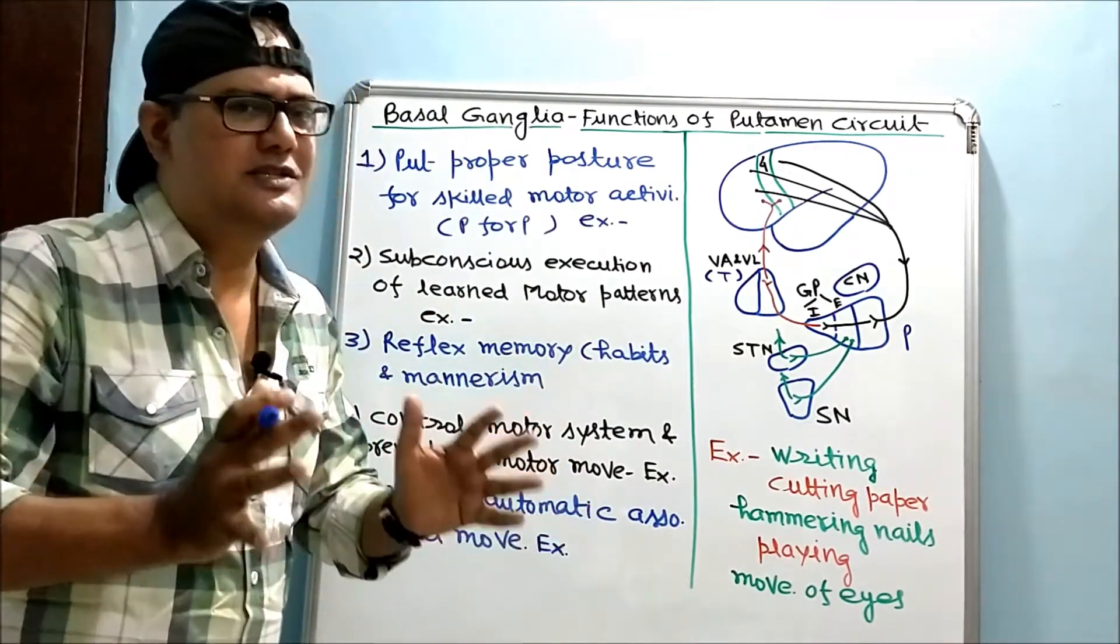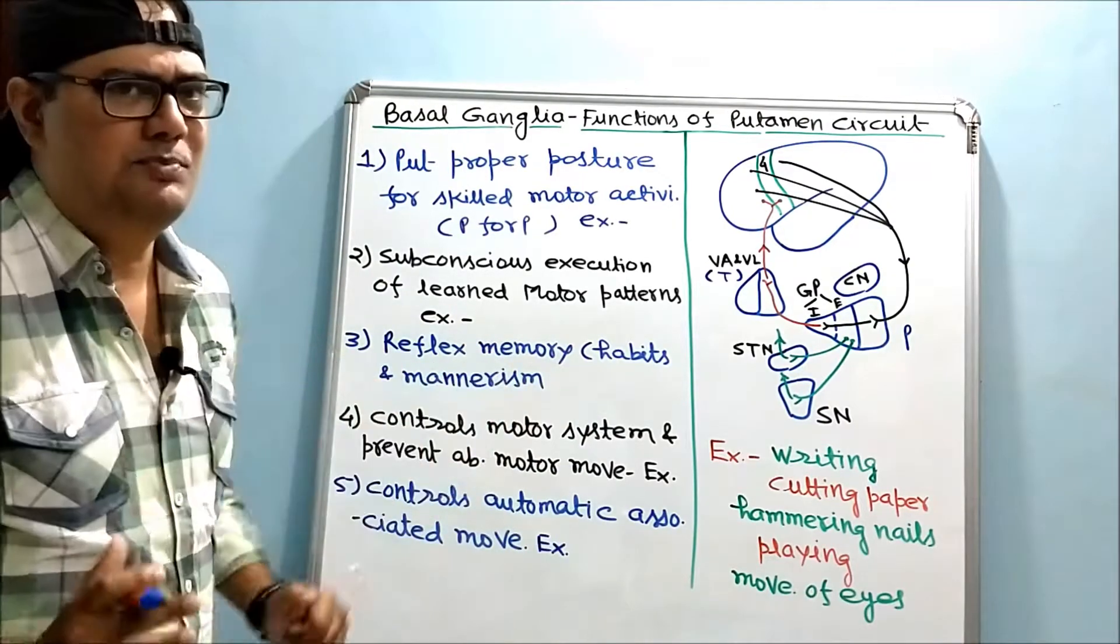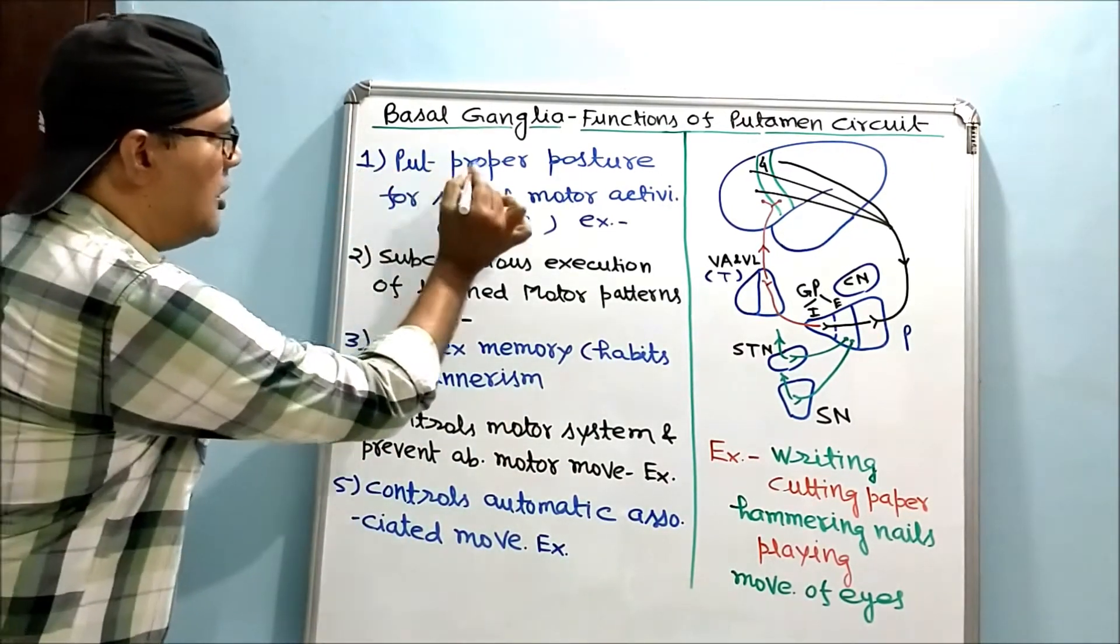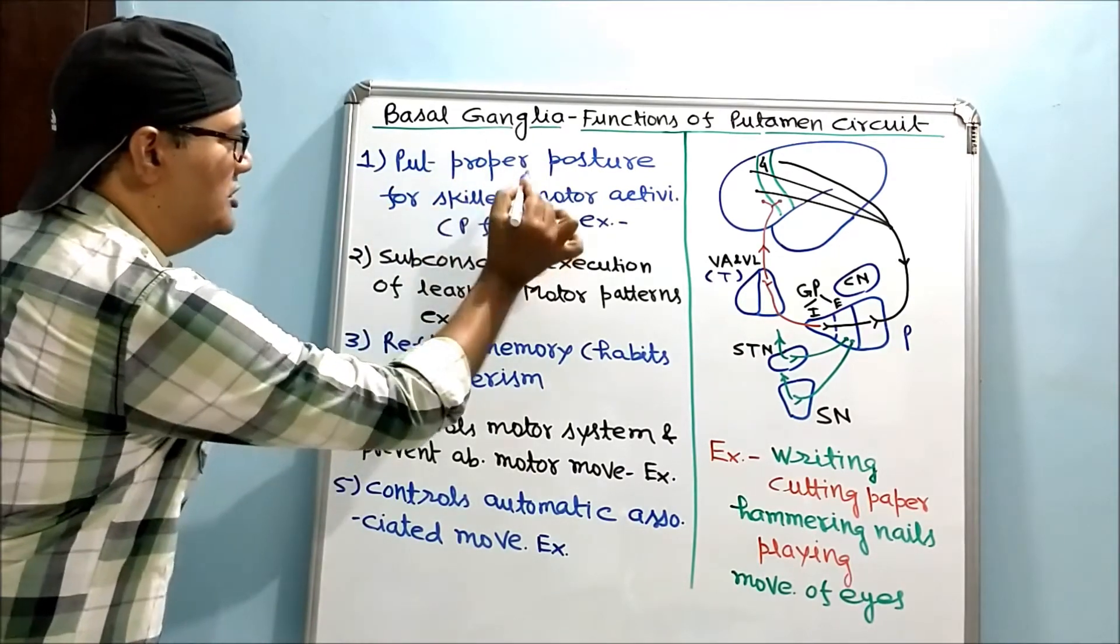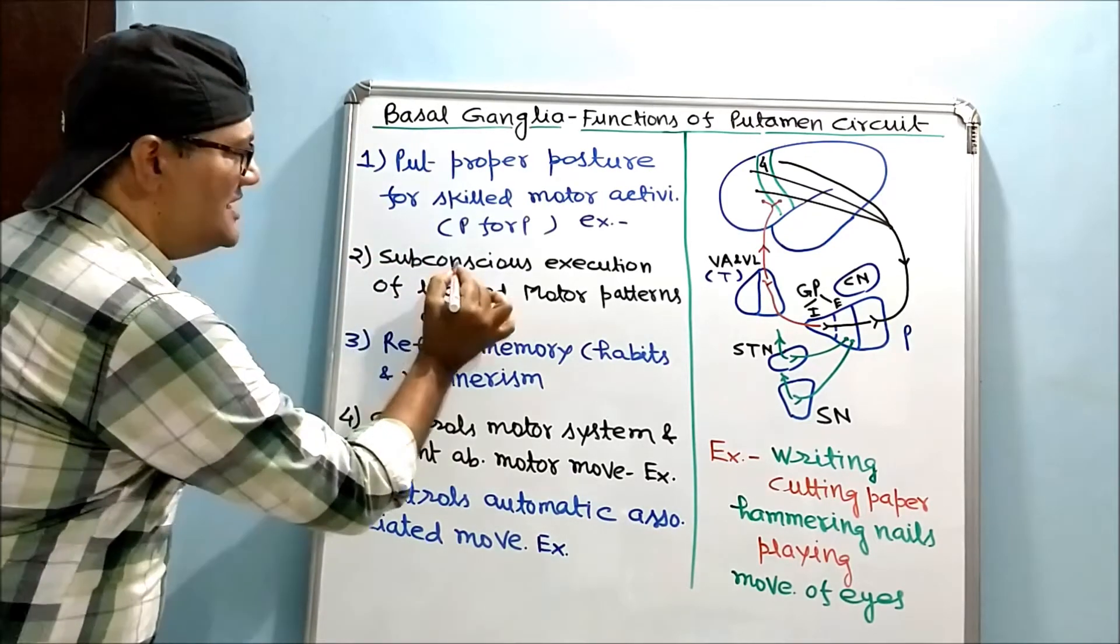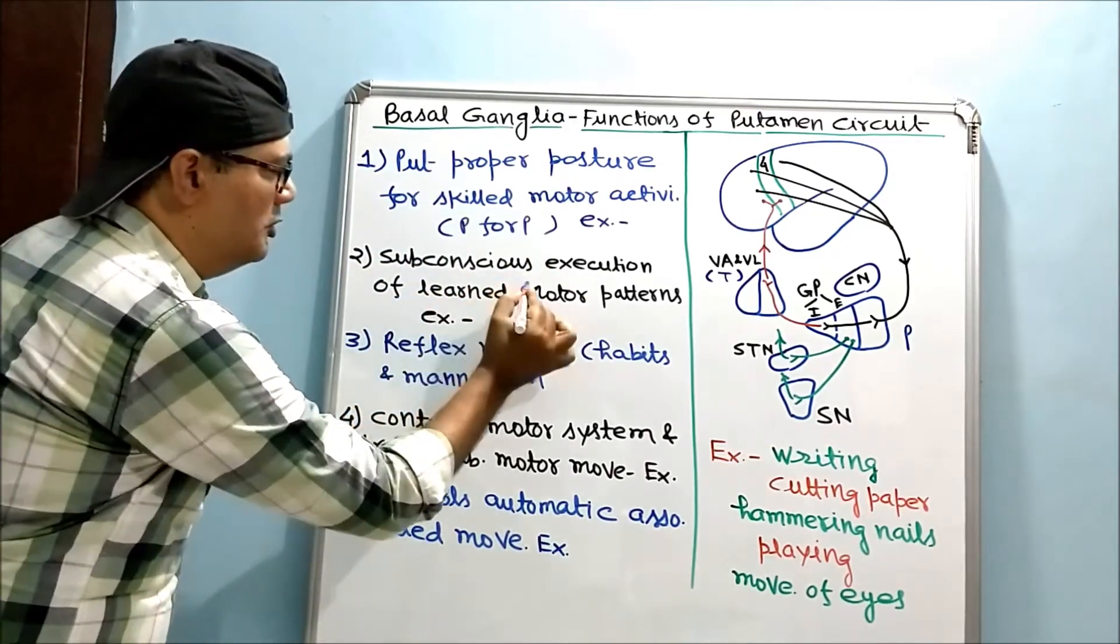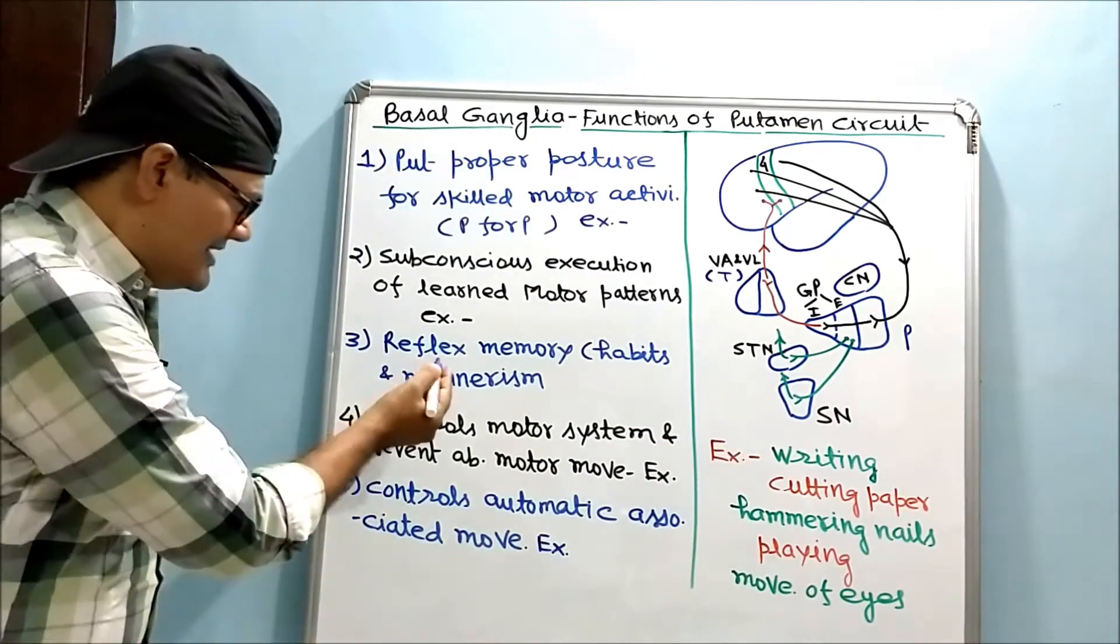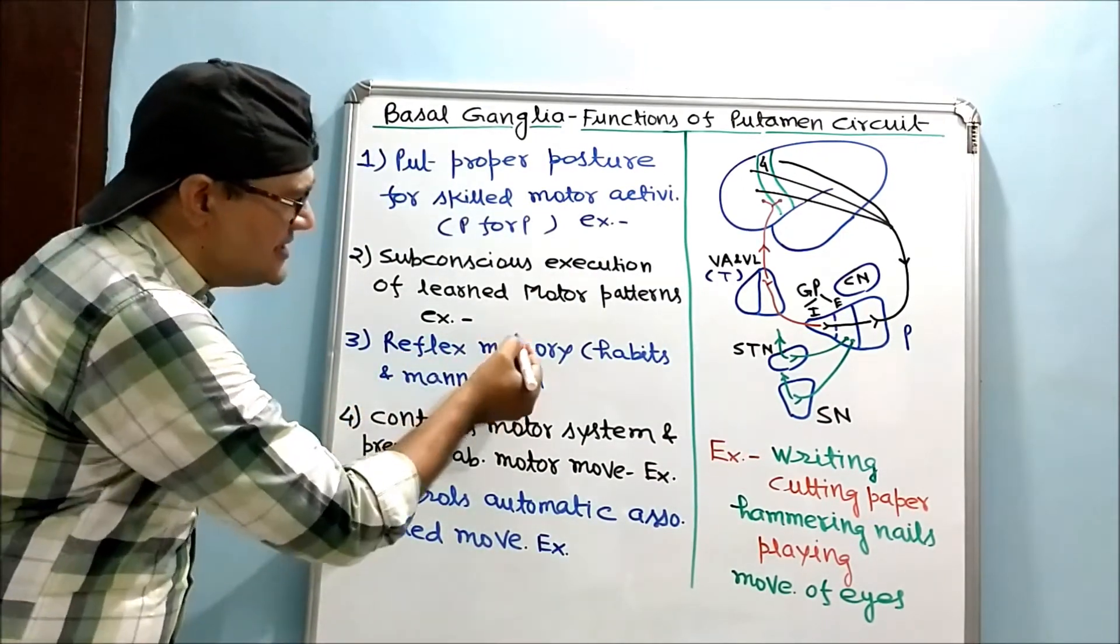Putamen circuit learned this pattern. This is sort of reflex memory. Now we can see the first three functions. It puts proper posture for skilled motor activities. It remembers and subconsciously executes learned motor patterns during complex motor activity. This is like a reflex memory.